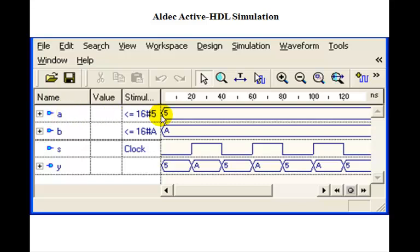We could pick a to, say, 5. You could assign this to the fixed value, 16 pound 5. This means hex 16, so it's a hex number 5, hex number a. And s is just a clock, 0, 1, 0, 1. And so notice that y is equal to a when s is equal to 0, 5, 5, 5, 5. And y gets b, a, when s is equal to 1. So sure enough, this turns out to be a quad 2 to 1 MUX.